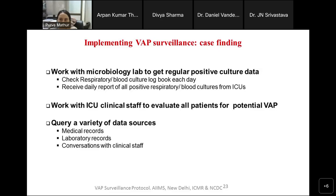To find cases, as for other device-associated infections, you must work with the microbiology lab, check respiratory registers and blood log books — blood is important in VAP because there is often secondary bacteremia and matching cultures are helpful. Work with ICU staff and query a variety of data sources including medical records, lab records, and conversations with clinical staff.